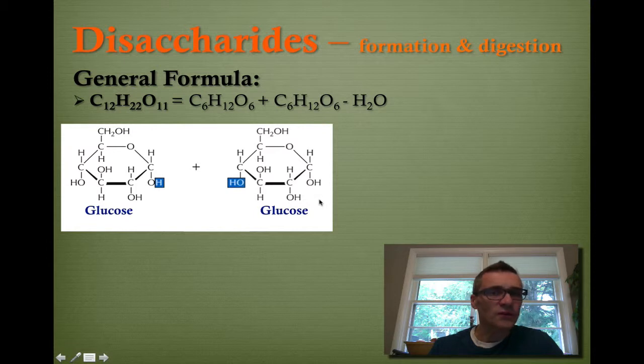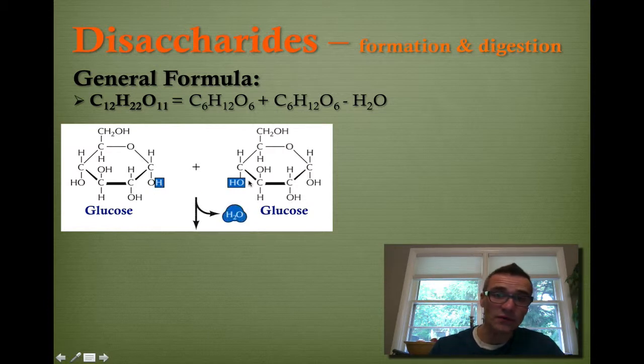So if we want to join these two molecules together, you'll notice here that we've highlighted a hydrogen molecule here and a hydrogen and oxygen over here. And if you take that H2O and simply remove it from between these two, you form a water molecule. And that water molecule gets released, and now the remaining two glucose molecules can be joined together.